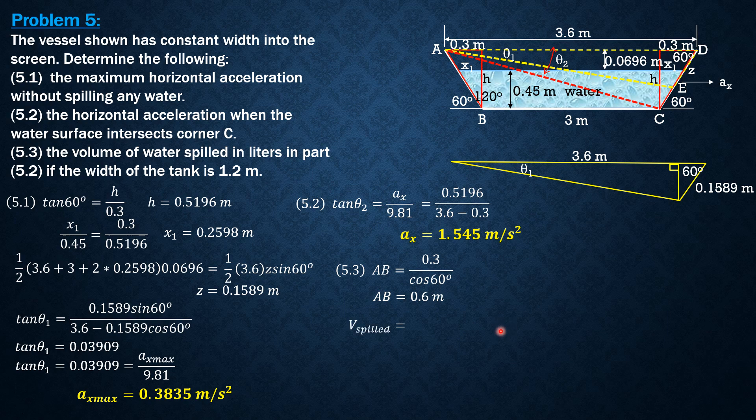So again, volume spilled equals initial volume of water. It equals area of this trapezoid water section, which is one half of the upper base 3 plus 2 times x₁, the lower base is 3, and the height is 0.45. So that's the area of the trapezoid, then times the width 1.2. So one half of quantity 3 plus 2 times 0.2598 which is x₁,